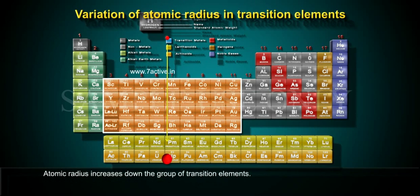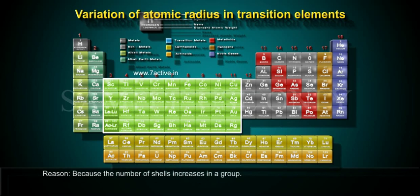Atomic radius increases down the group of transition elements because the number of shells increases in a group.